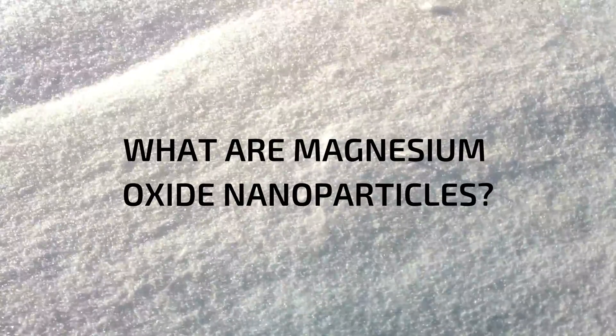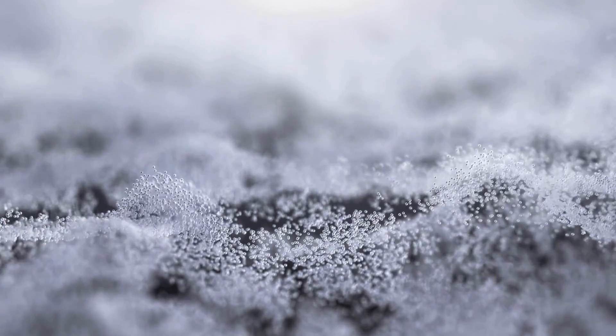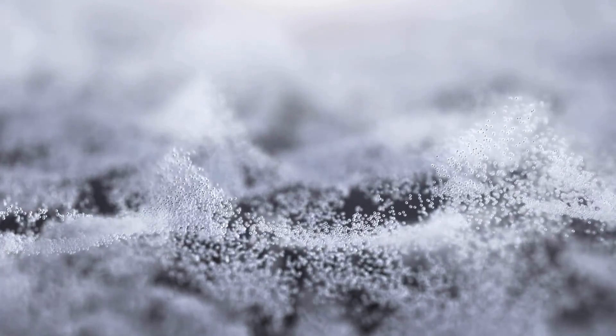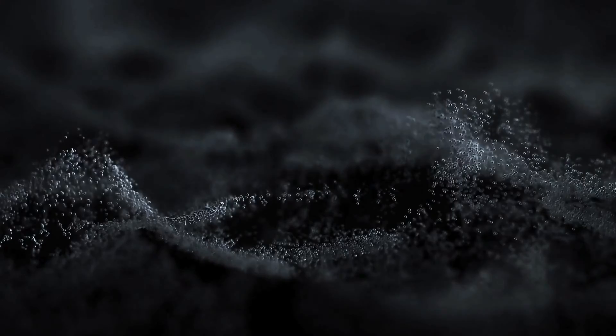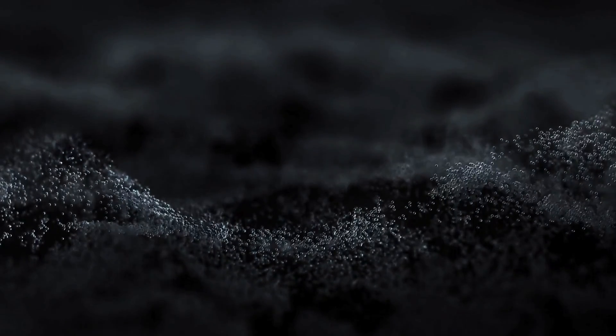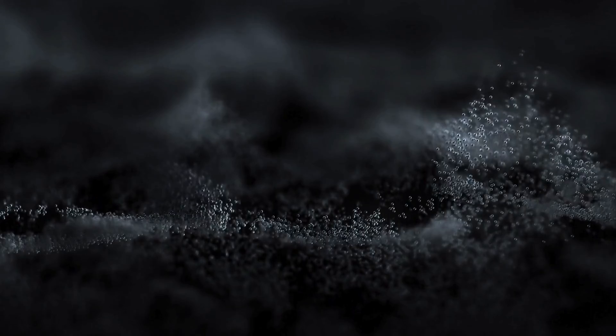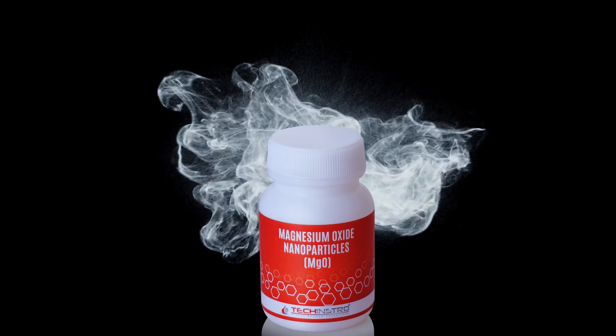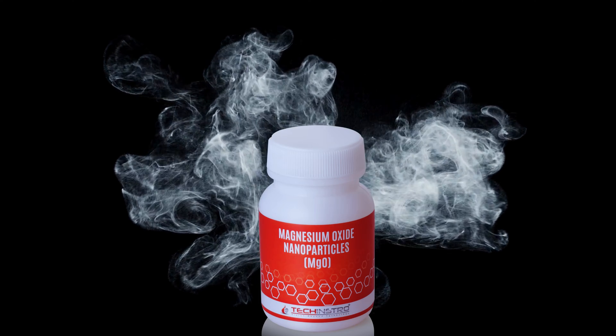What are magnesium oxide nanoparticles? Magnesium oxide nanoparticles are nanoparticles composed of magnesium oxide. They typically range in size from 1 to 100 nanometers. These nanoparticles possess unique properties due to their high surface area to volume ratio. In simpler terms, when materials are shrunk to the nanoscale, their surface properties dominate, giving them unique physical and chemical characteristics.